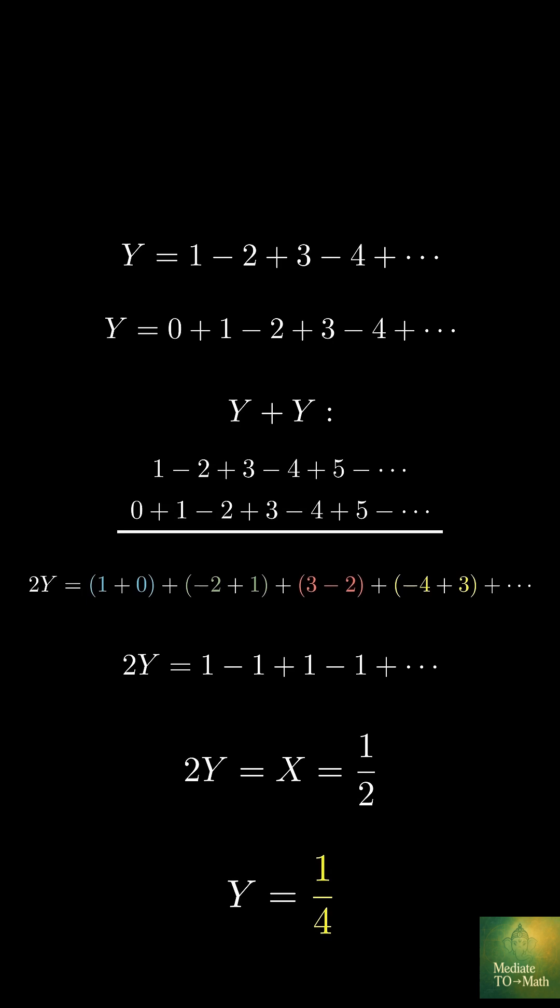Now, back to our original equation. Let's call the sum of all positive numbers s. And remember, y equals 1 minus 2 plus 3 minus 4 and so on. What happens if we subtract y from s?